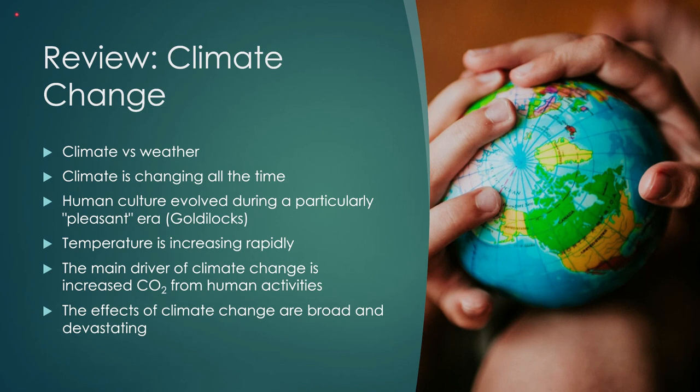We also know that human culture evolved during a particularly pleasant era in our climate history — what I like to think of as the Goldilocks time, when it wasn't too hot and it wasn't too cold, and there was enough rainfall to sustain agriculture. Humans were around before that era, but for our population to expand, for culture, agriculture, education, and technology to evolve, those really evolved during this pleasant era. So we've been pretty lucky.